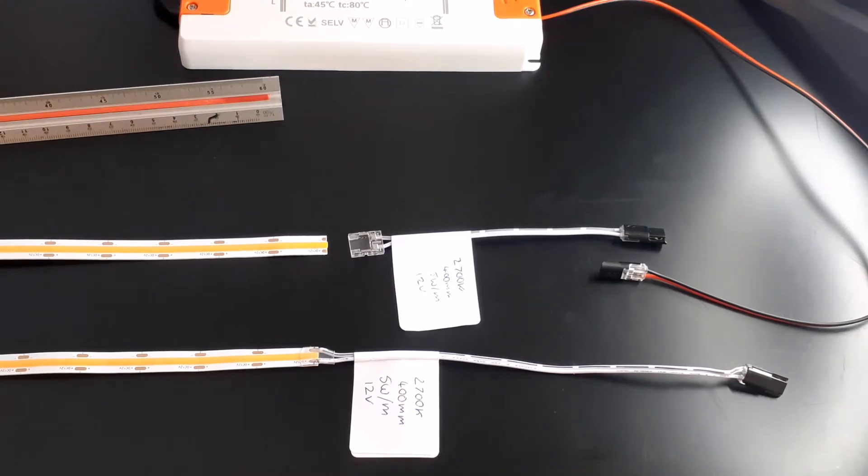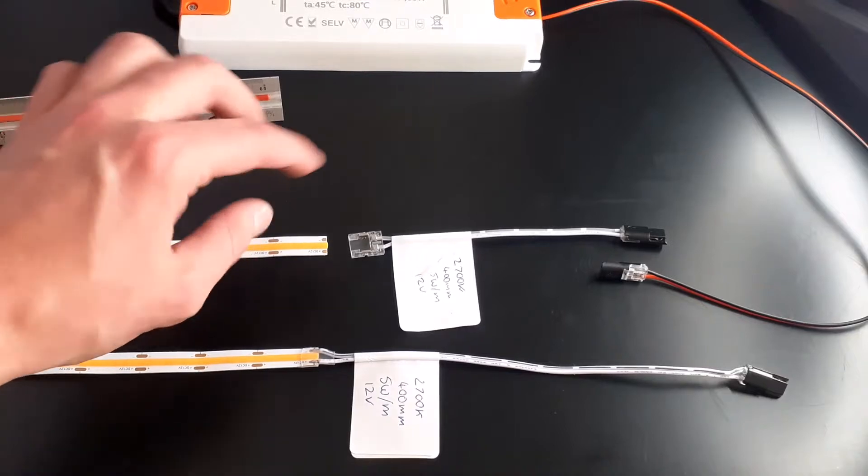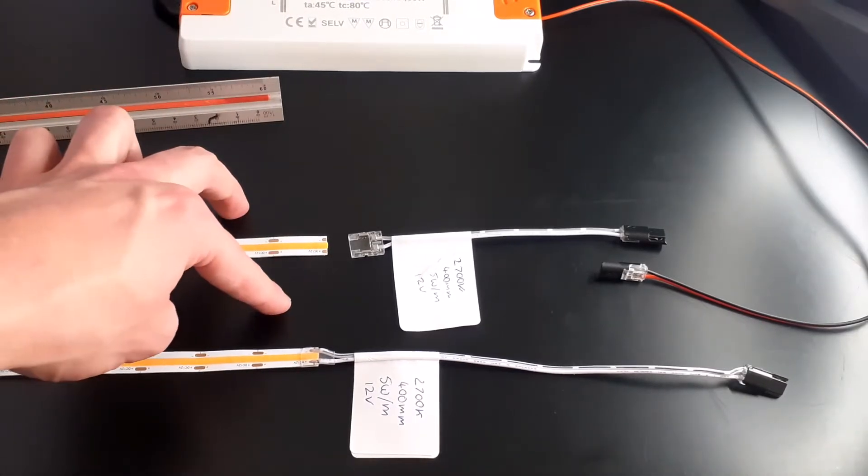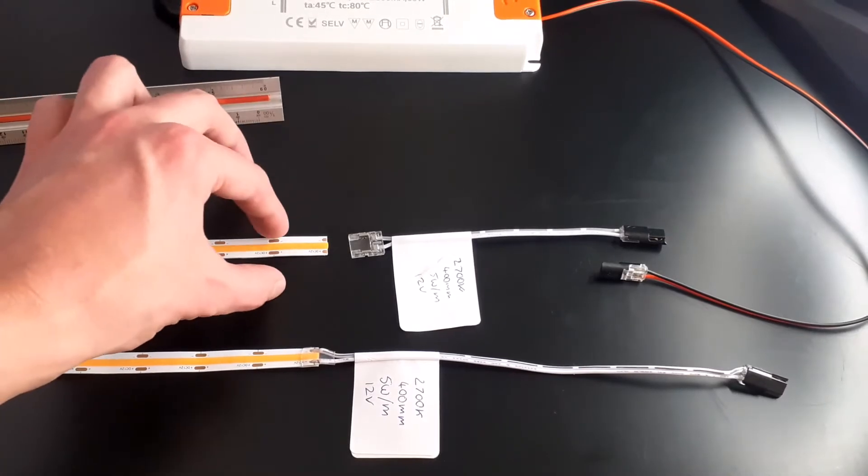What's up everyone, this is Stevie Watts and today I'm going to show you our new seamless cobbler tape light. It's 2700 Kelvin in color temperature, 10 mil in width with a very nice thick PCB for heat dispersion, 5 watt per meter and 12 volt.